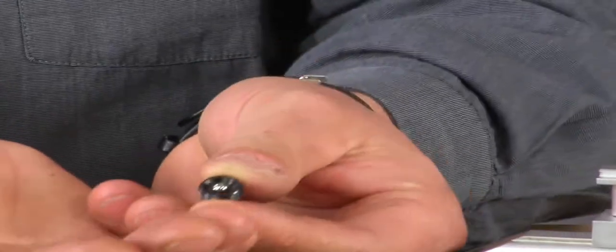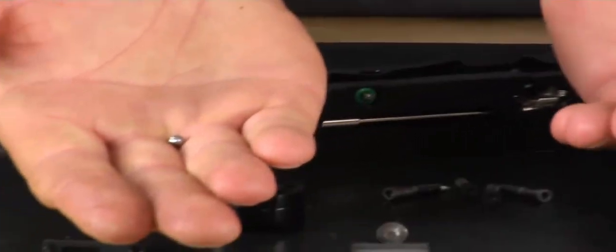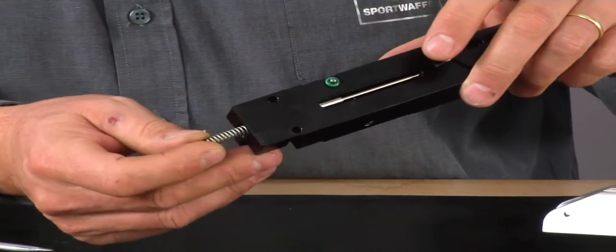Underneath is a ball which is situated in the center of the velocity screw. Next you remove the pressure spring that sits underneath.